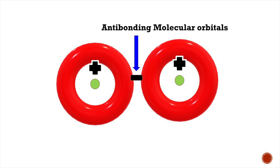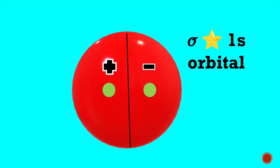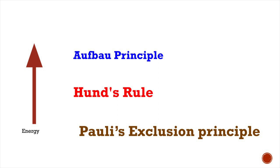Bonding molecular orbitals are represented as sigma or pi orbitals, whereas anti-bonding molecular orbitals are represented as sigma star and phi star orbitals. Electrons are filled in molecular orbitals based on the Aufbau principle, Hund's rule, and Pauli's exclusion principle.